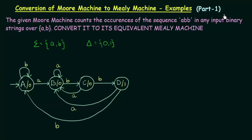In this lecture, we will be seeing another example of conversion of Moore machine to Mealy machine. The given Moore machine counts the occurrences of the sequence ABB in any input binary strings over AB. Convert it to its equivalent Mealy machine.